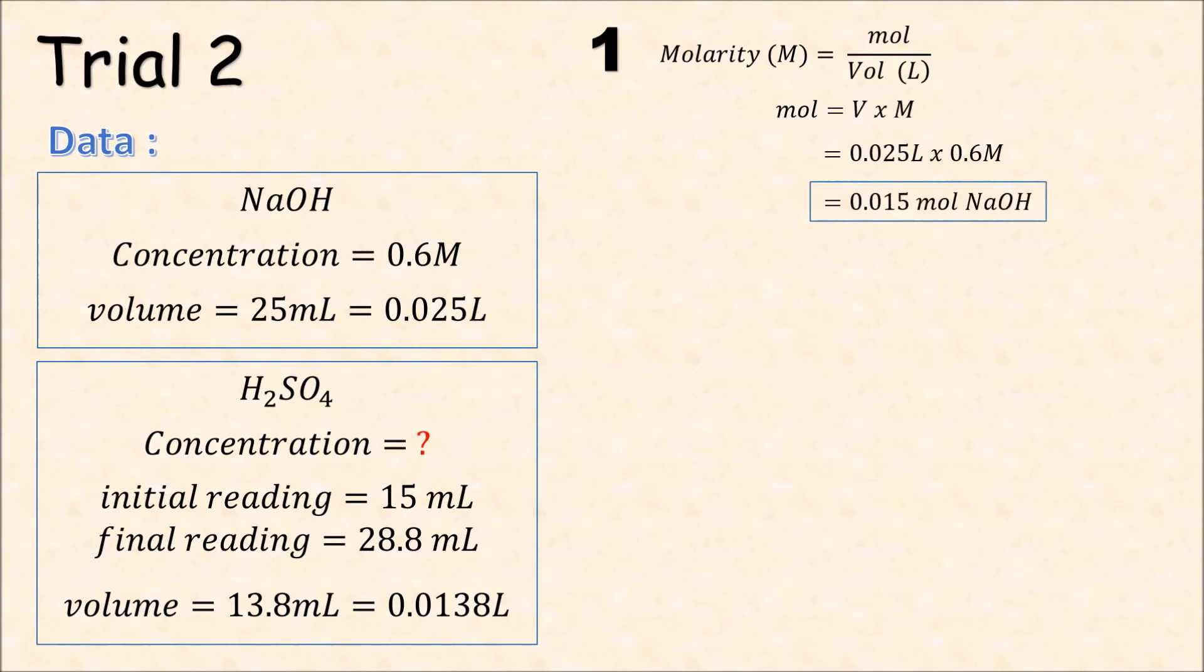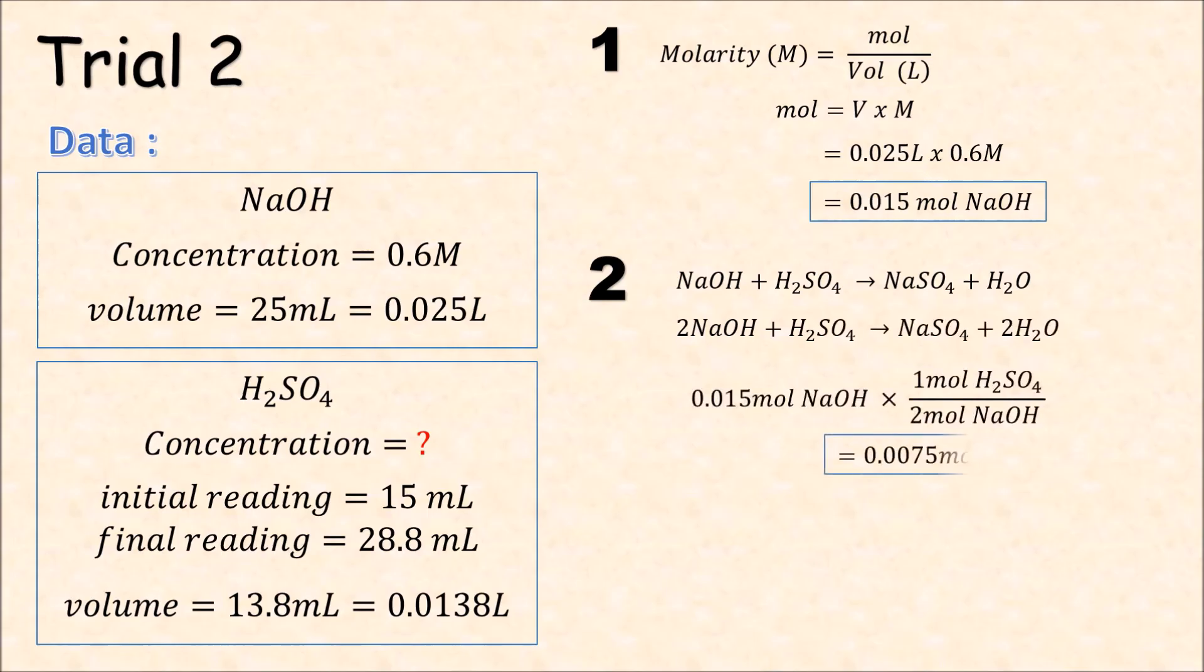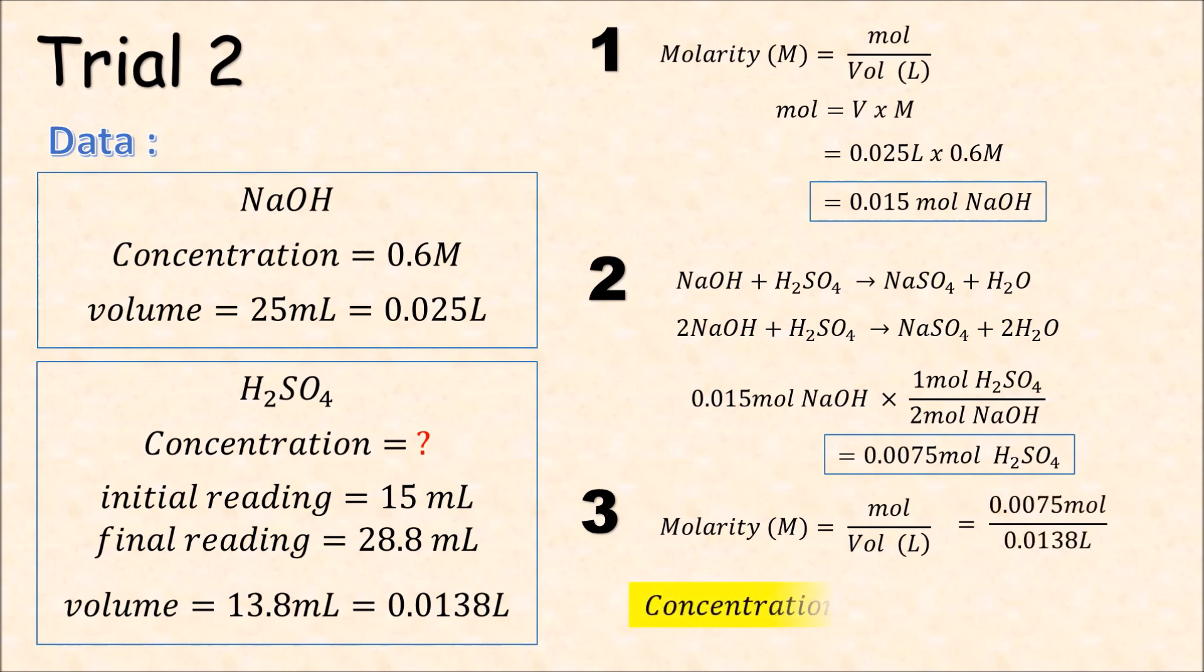We will get the mole of NaOH. And then for step 2, we will get the mole of sulfuric acid. For step number 3, we will just change the volume of the sulfuric acid, which is 0.0138 liter. So we have the concentration of 0.54 molar.